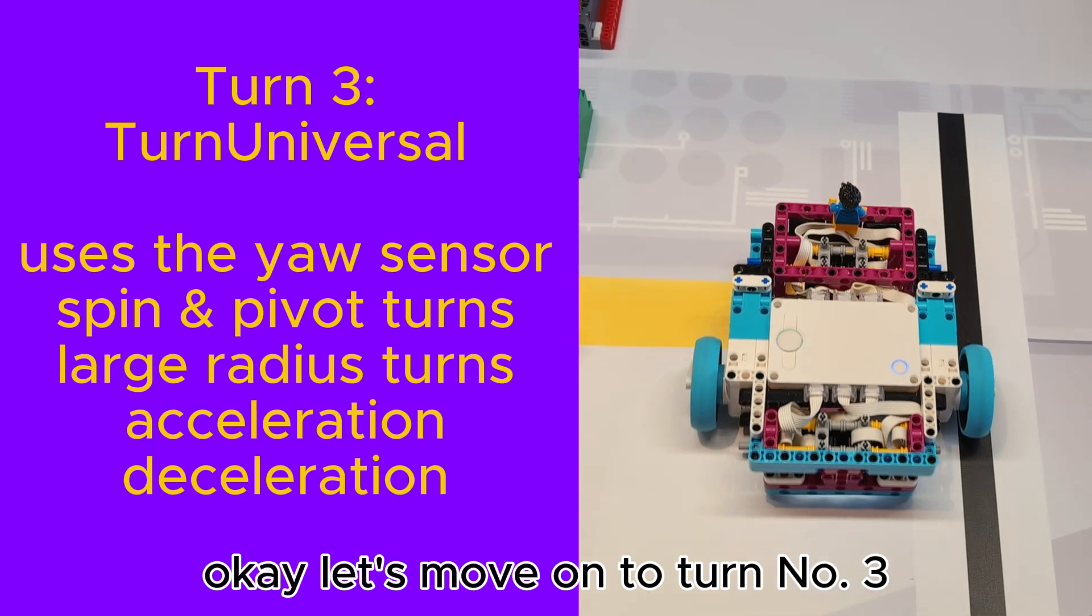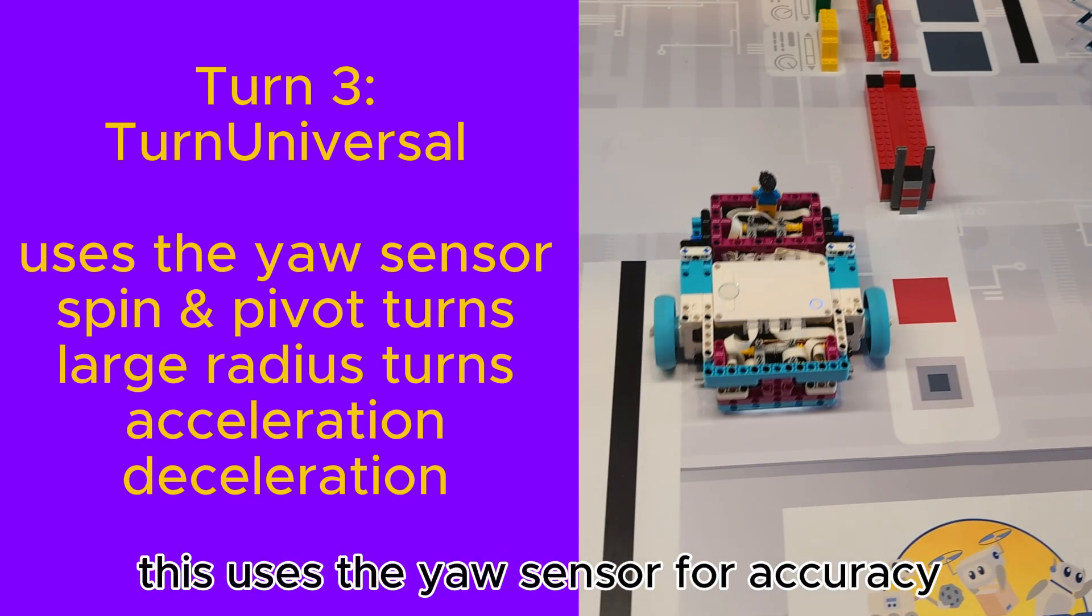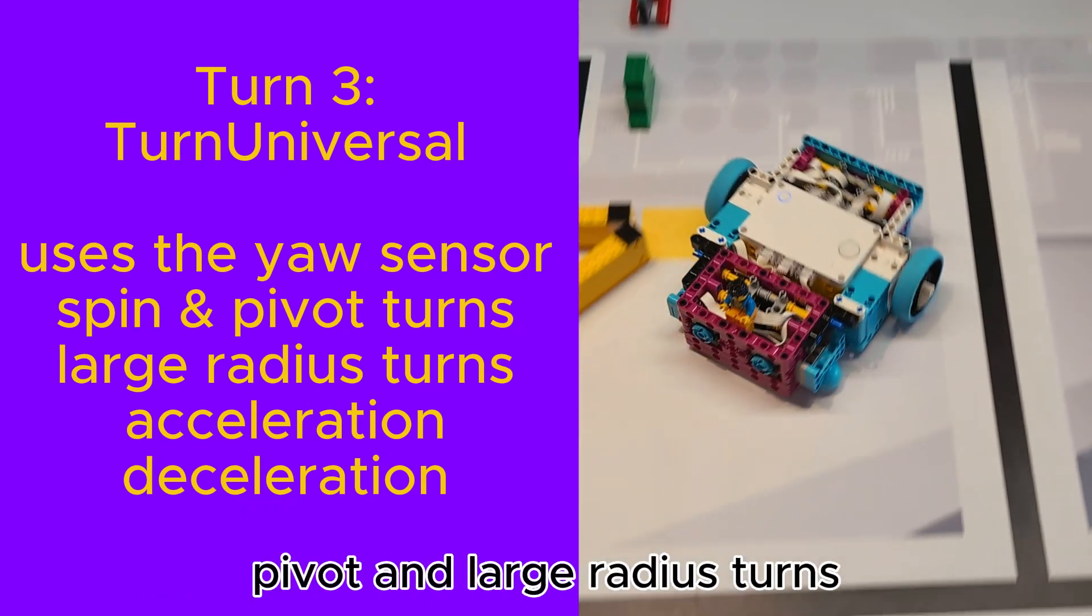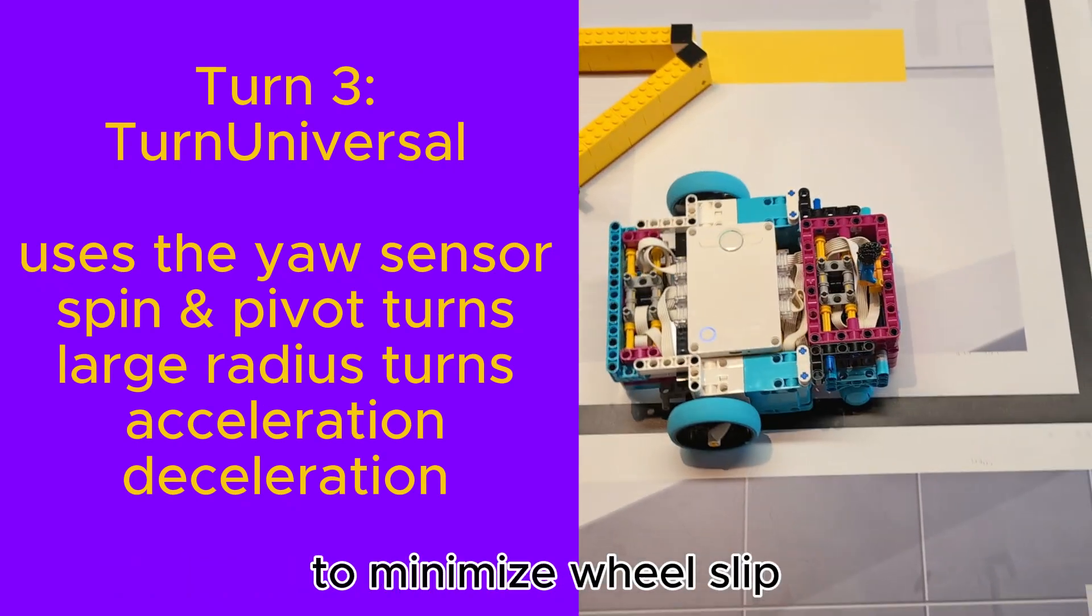Okay, let's move on to turn number 3, the universal turn. This uses the yaw sensor for accuracy and can do spin, pivot and large radius turns. It also uses acceleration and deceleration to minimize wheel slip.